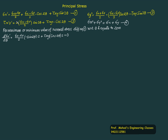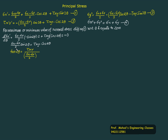The derivative of sigma x plus sigma y by 2 is 0. The derivative of sigma x minus sigma y by 2 into cos 2 theta gives minus sin 2 theta multiplied by 2. The derivative of tau x y sin 2 theta is tau x y cos 2 theta multiplied by 2. We equate to 0 for maximum or minimum, and the 2s cancel. What remains is: sigma x minus sigma y by 2 into sin 2 theta equals tau x y cos 2 theta. Therefore, tan 2 theta equals tau x y upon sigma x minus sigma y by 2.